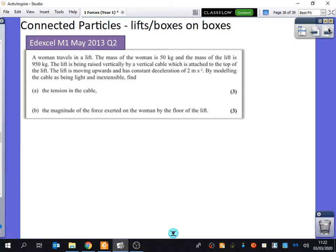I'm going to start off by talking about a lift kind of question. We're going to be thinking about someone who is standing inside a lift. We're just going to read through this question and try and pick out some information here. It says that a woman travels in a lift. The mass of the woman is 50 kilograms and the mass of the lift is 950 kilograms. The lift is being raised vertically by a vertical cable which is attached to the top of the lift. The lift is moving upwards and has a constant deceleration of 2 meters per second squared. By modelling the cable as being light and inextensible, find the tension in the cable.